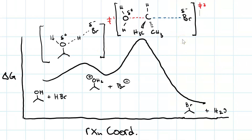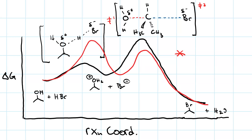At the second transition state, the C–O bond is breaking and the C–Br bond is forming. Actually, a correction: the H–Br bond is pretty strong, so the two activation energies should be closer to equal — probably more like that. But otherwise, this two-step energy diagram is a solid representation of the reaction.